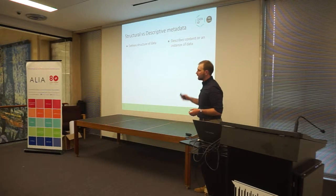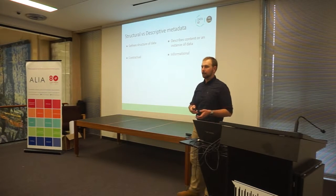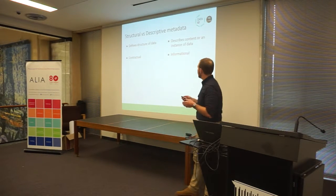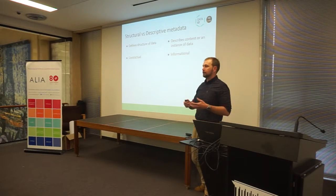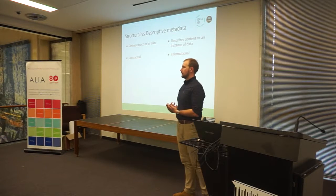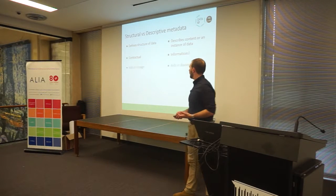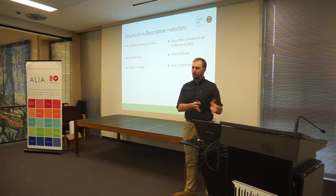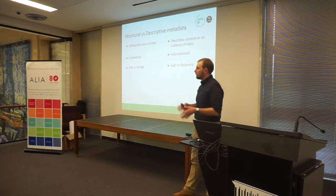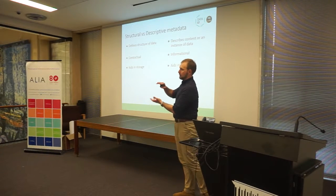Ultimately, one type is about the data broadly, and one is about a particular instance of data. It's the difference between information about the data, or a contractual way of saying this is how it's stored. Structural information can be very contractual — it must be like this; if it's not, there's an obvious invalid problem. They also help with the dichotomy of storage and retrieval: structural information tells you how it's stored, and descriptive information tells you how you can find it.